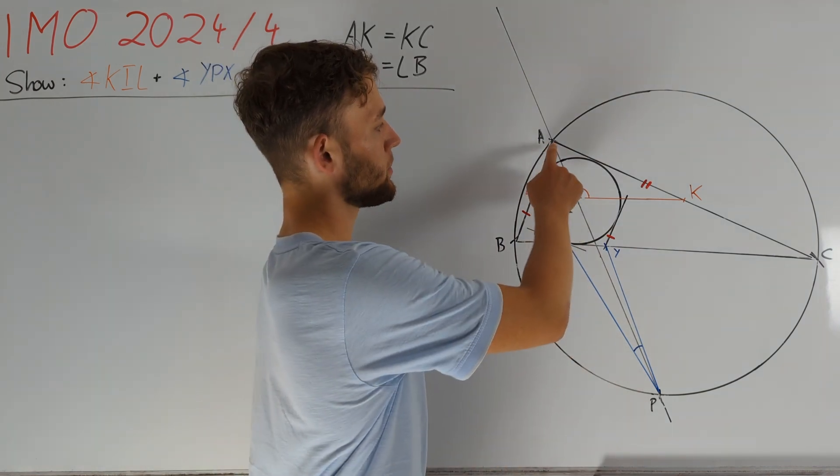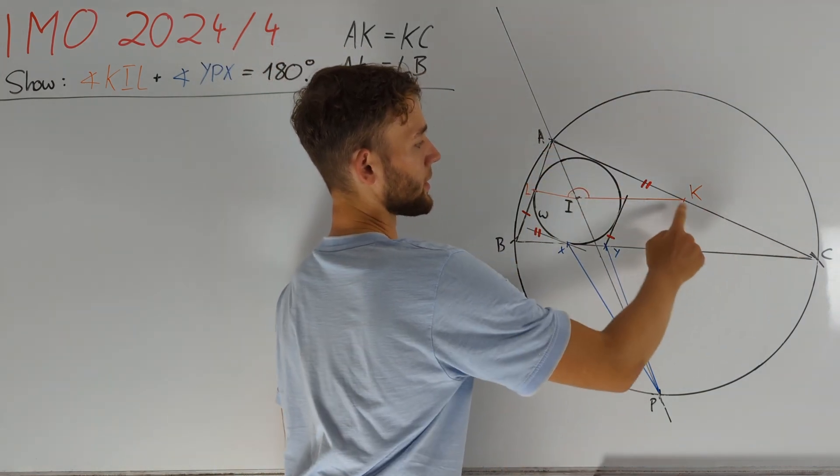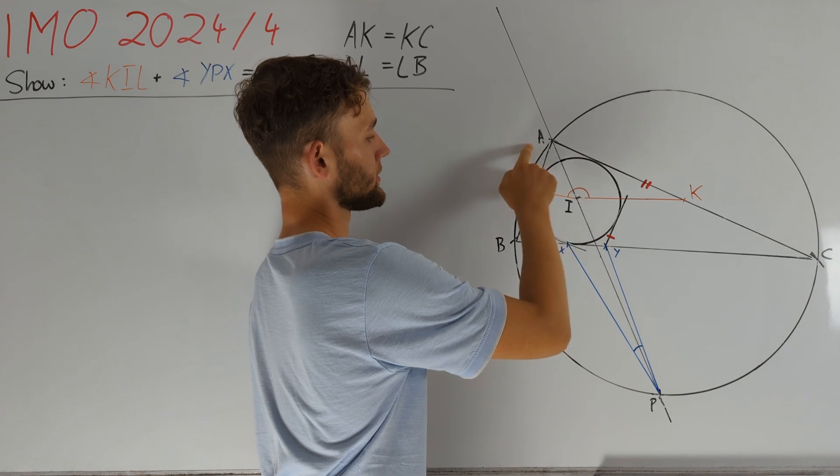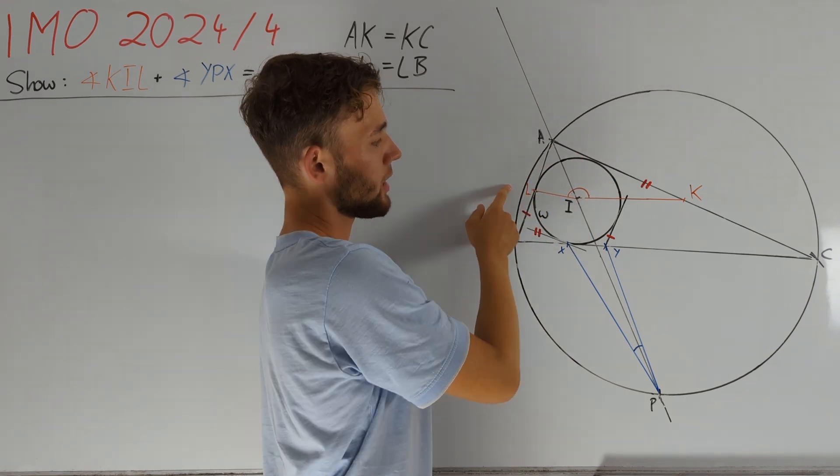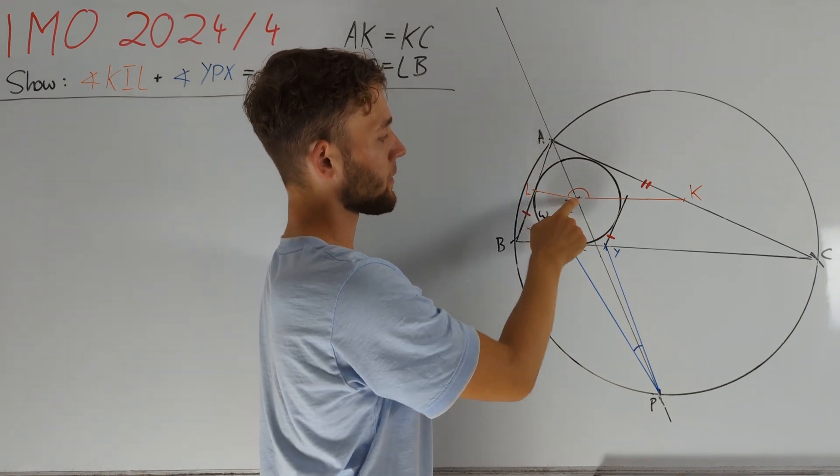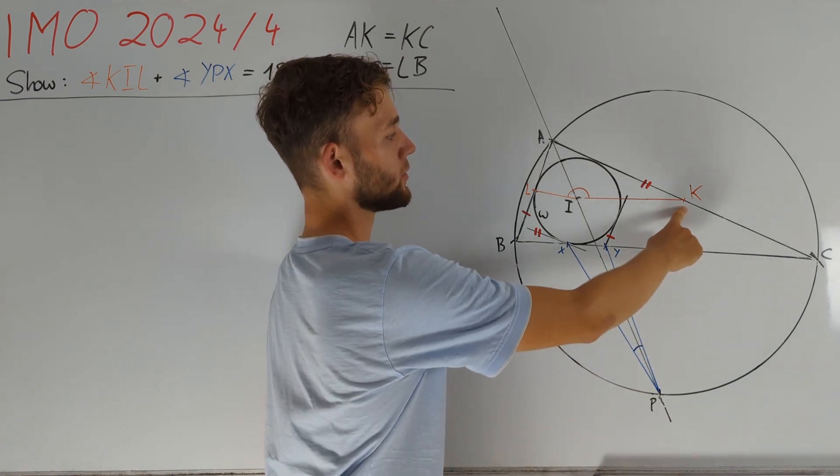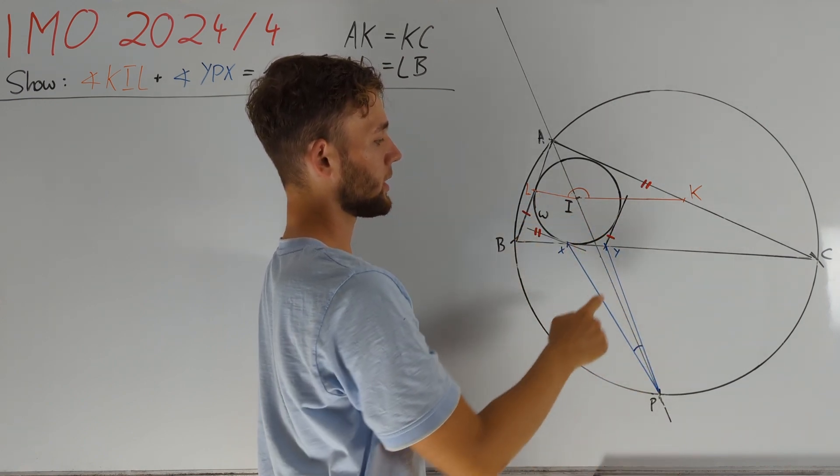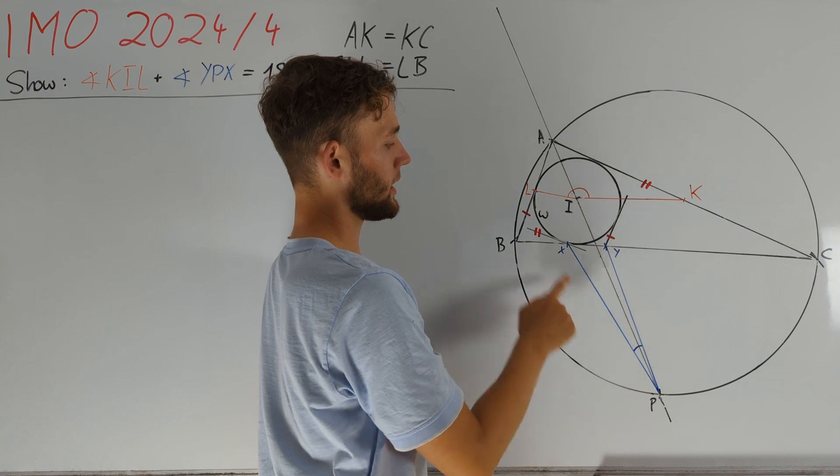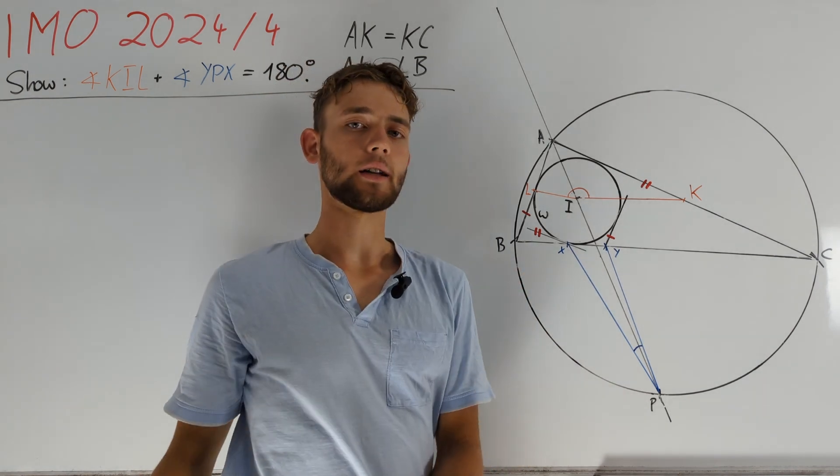Lastly, we denote the midpoint of side AC with K and the midpoint of side AB with L. Our task is to prove that the sum of the orange and the blue angle is 180 degrees. So we have to prove angle KIL plus angle YPX equals 180 degrees.